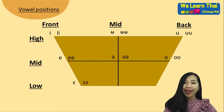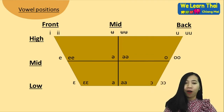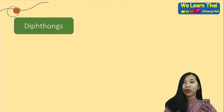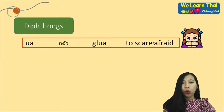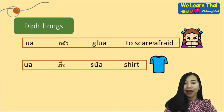Next one: the tip of the tongue is touching the lower teeth, like 'ae'. Next one: the mouth is fully open, like 'a'. And the last one — tip of the tongue. For example, one word means 'too scared' or 'afraid'. For example, another word means 'shirt'.